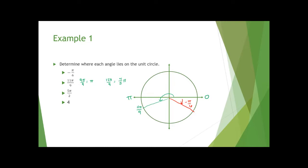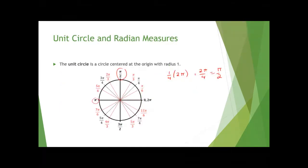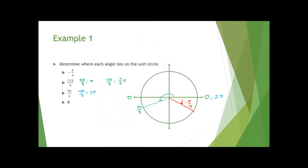For 5π/2: 4π/2 reduces to 2π, which is back at the zero point since 0 and 2π are the same location. So 5π/2 is an extra π/2 beyond a full revolution — that's 90 degrees up. The angle completes a full circle and then goes another quarter turn, placing the terminal side pointing straight up.